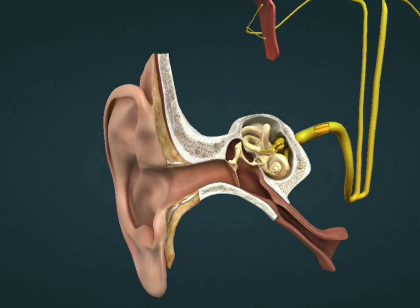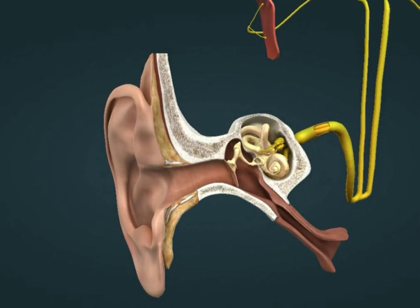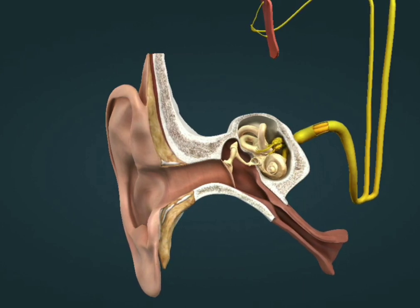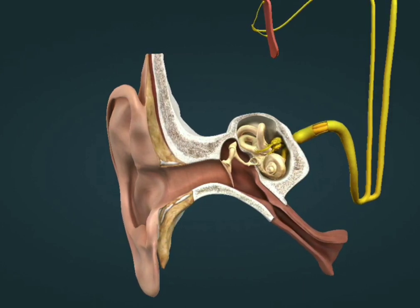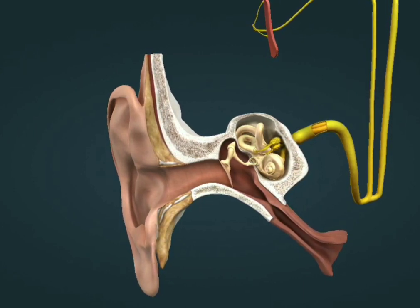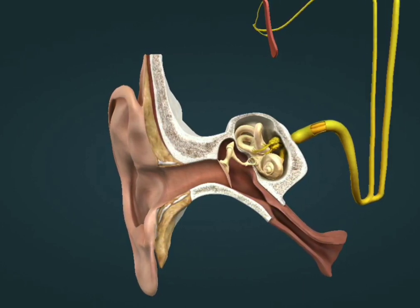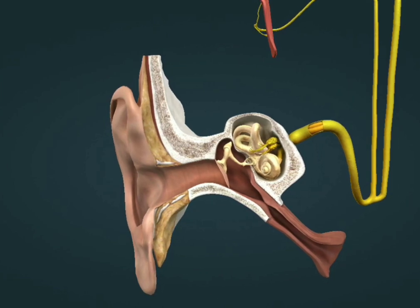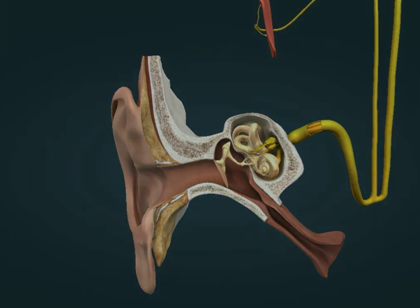Sound waves are directed into the external auditory canal by the auricle. Sound waves cause the eardrum, which closes the auditory canal, to vibrate.